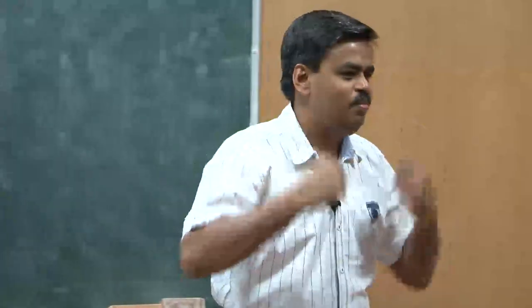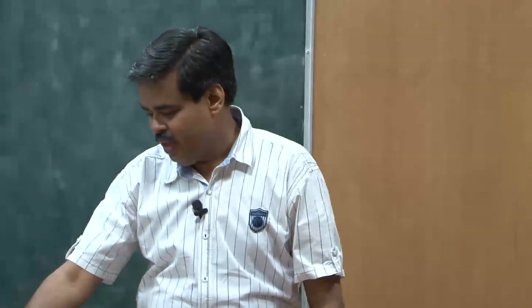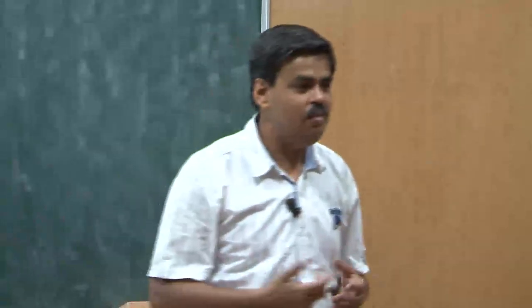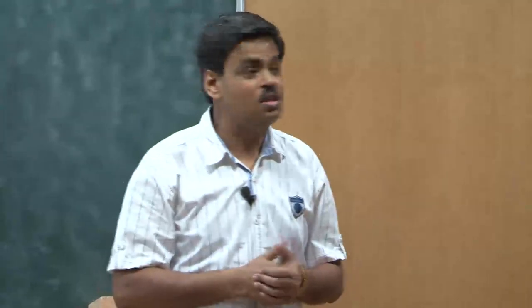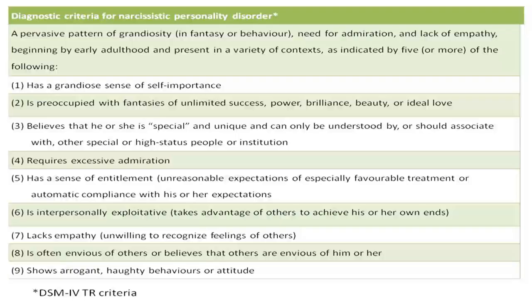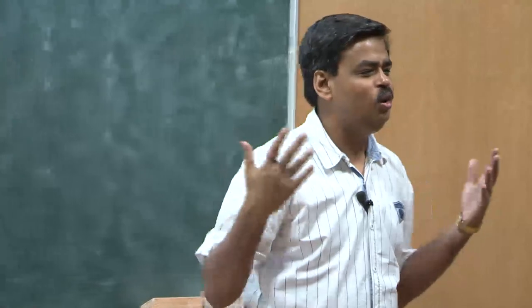The pattern of grandiosity can be in fantasy or in behavior, along with a need for admiration and lack of empathy. It begins in early adulthood and is present in a variety of contexts. Out of 9 symptoms, five or more should be present. One has a grandiose sense of self-importance — for example, why does the world exist? Because I am right now here. Why does this class exist? Because I have registered for the course — so grandiosity where everything is dedicated to the self. Two, preoccupation with fantasies of unlimited success, power, brilliance, beauty, and ideal love — all things in the most exaggerated fashion.